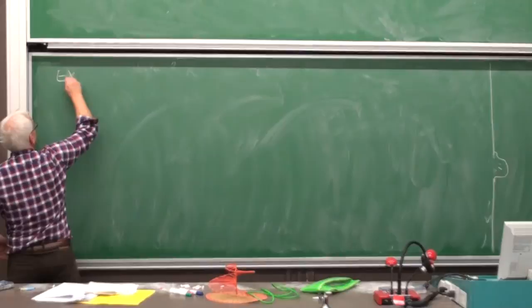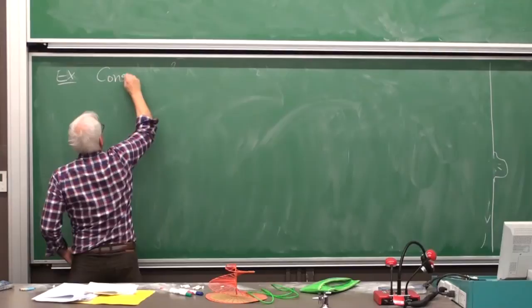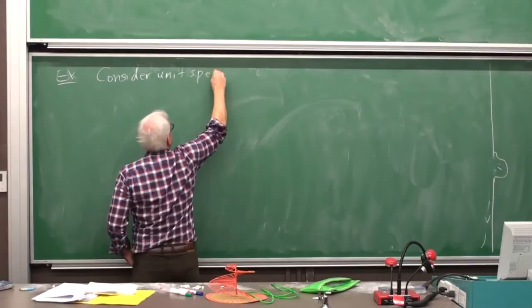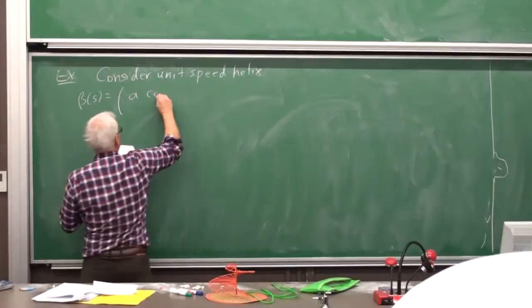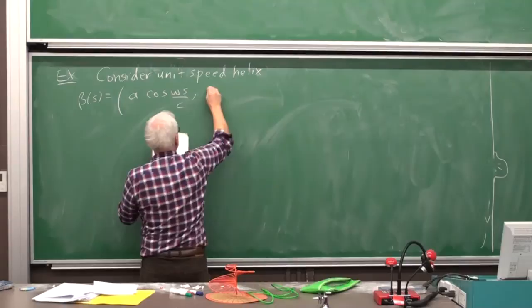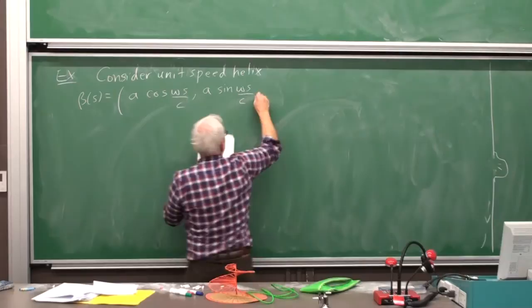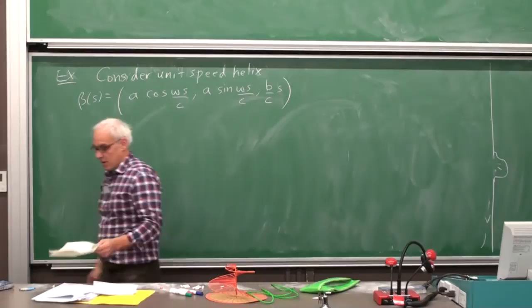All right, so let's have a look at an example now. It's a famous, well-known example. We're going to consider a unit speed helix, a rather general one. So beta of S equals A times cosine WS on C, A times sine of WS on C, and B on C times S.